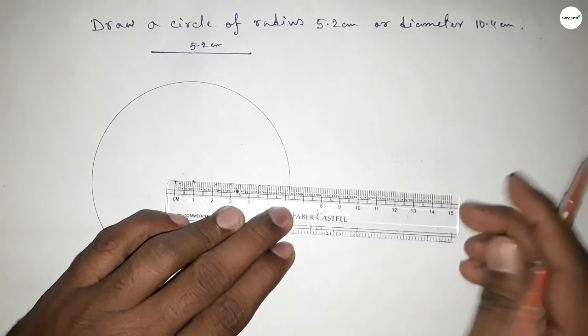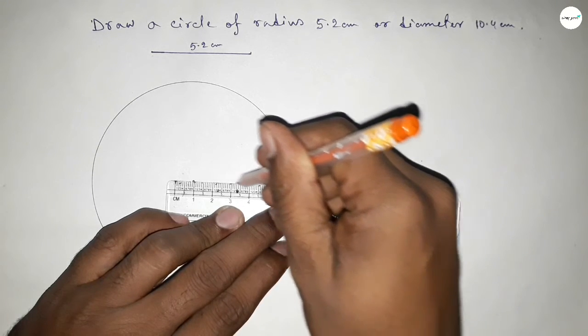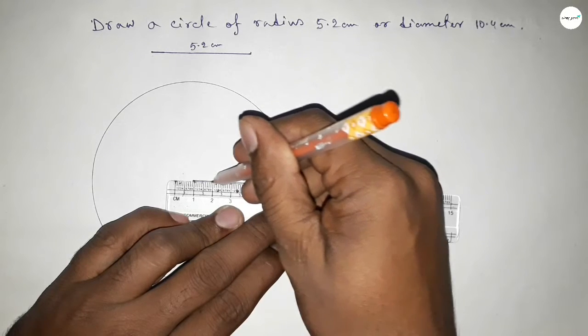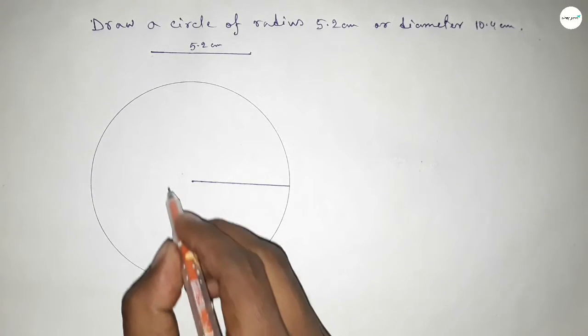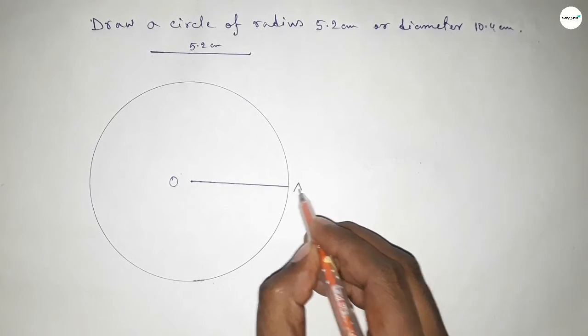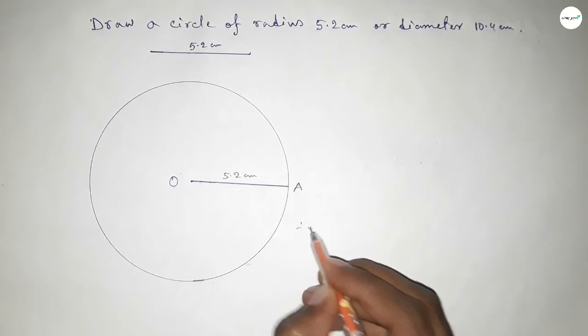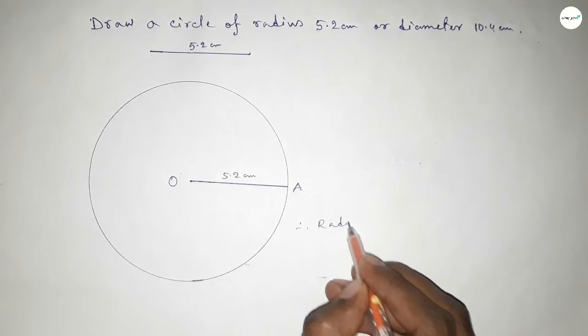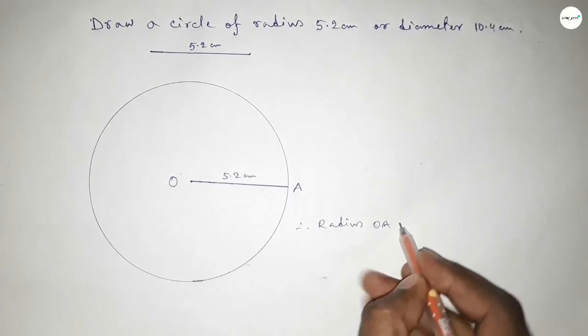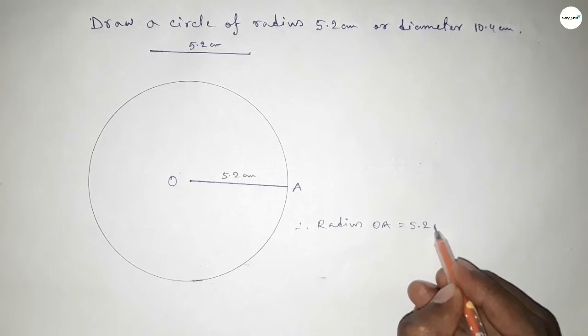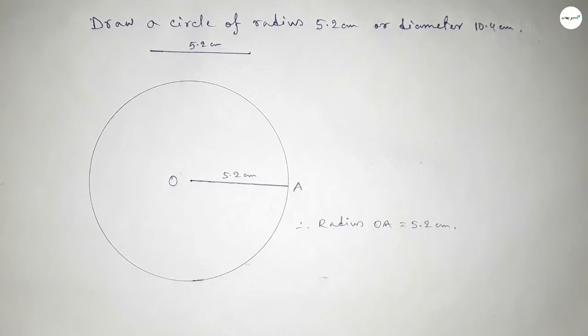The radius is 5.2 centimeters. Joining this and marking the center O and a point A, so OA equals 5.2 centimeters. Therefore, radius OA equals 5.2 centimeters.